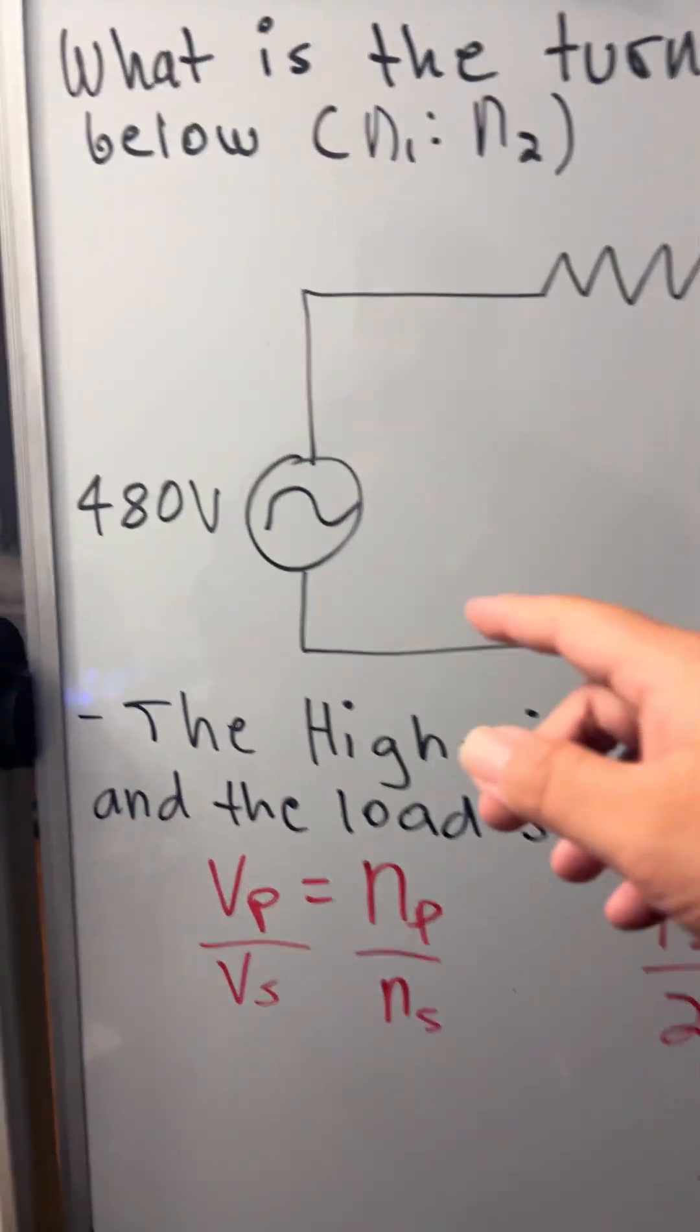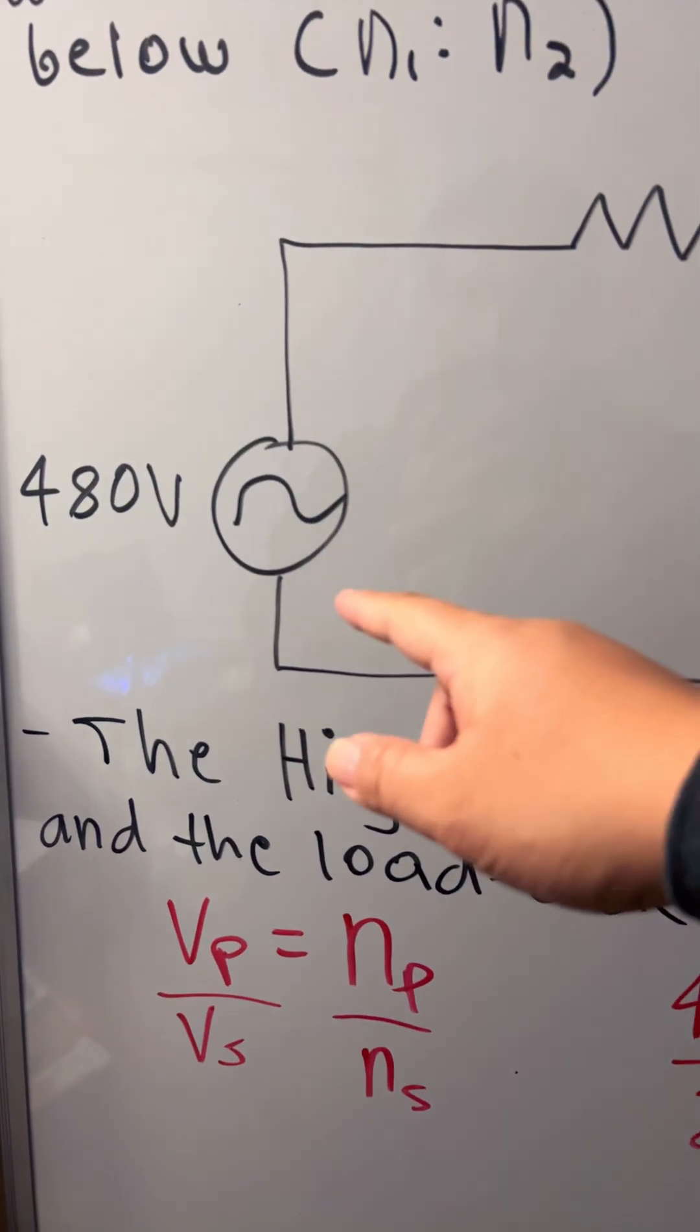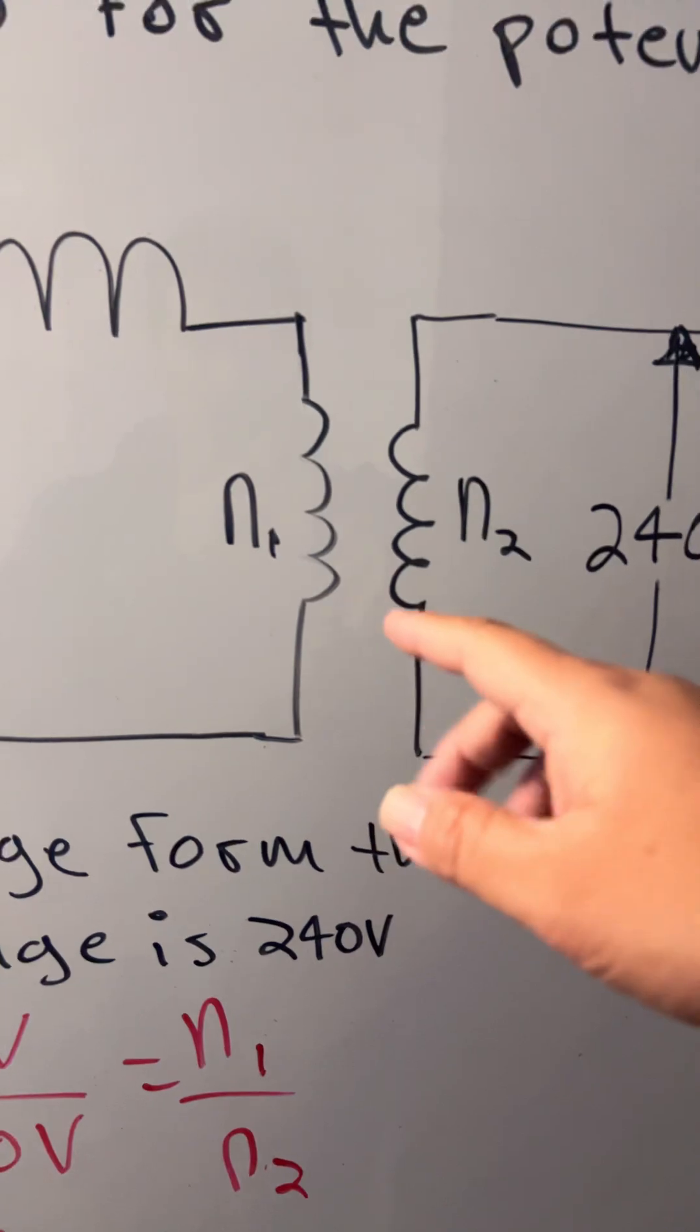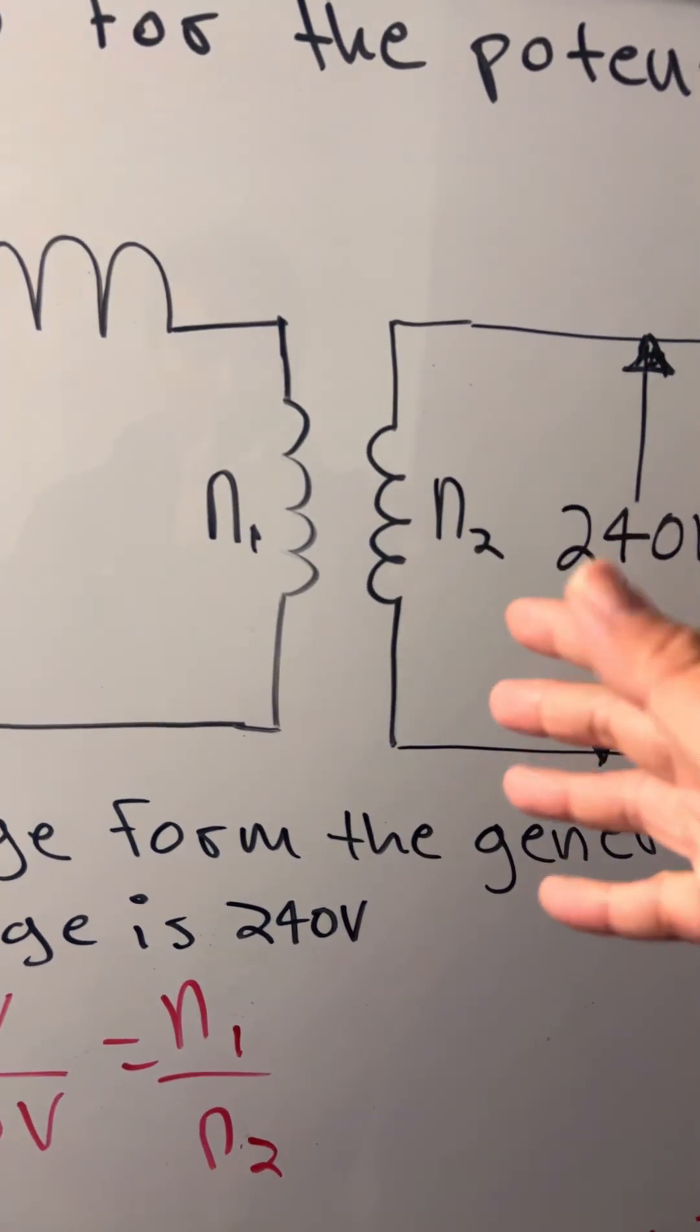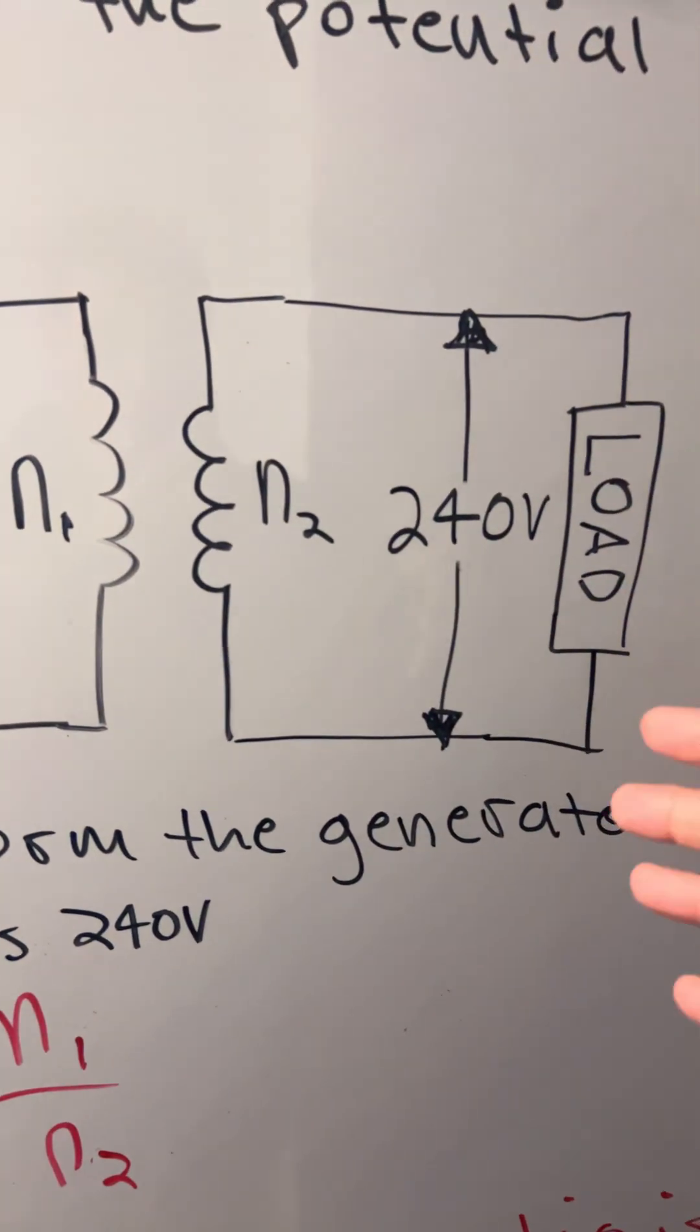So here we have a 480 volt source. We have N1 as the primary turn and N2 as the secondary turn.